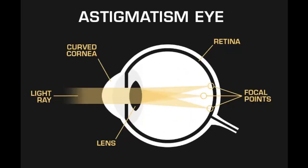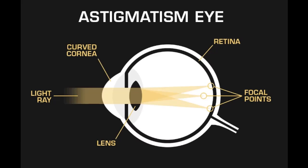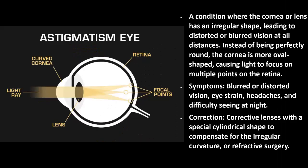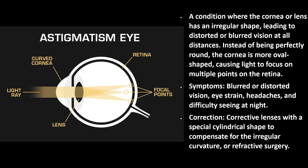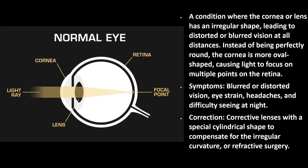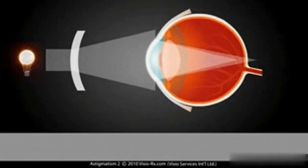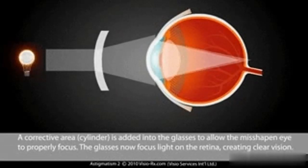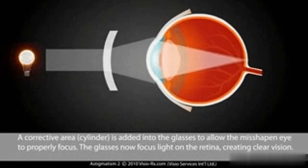Astigmatism: A condition where the cornea or lens has an irregular shape, leading to distorted or blurred vision at all distances. Instead of being perfectly round, the cornea is more oval-shaped, causing light to focus on multiple points on the retina. Symptoms include blurred or distorted vision, eye strain, headaches, and difficulty seeing at night. It can be corrected using glasses or contact lenses with a spherocylindrical shape or refractive surgery.